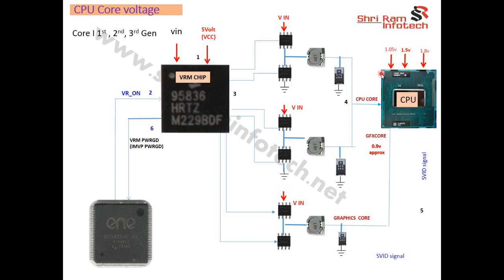Before the CPU core voltage is generated, the CPU must receive three voltages: 1.05V, 1.5V, and 1.8V from different pulse width modulators. Once the CPU gets all these voltages, it receives the VRM signal. This VRM signal comes from the SIO in Compel, Quanta, and Vistron motherboards. In Foxconn motherboards, this VRM signal is generated by a different section. The VRM signal is supposed to be 1 volt or 3 volts depending on the section.